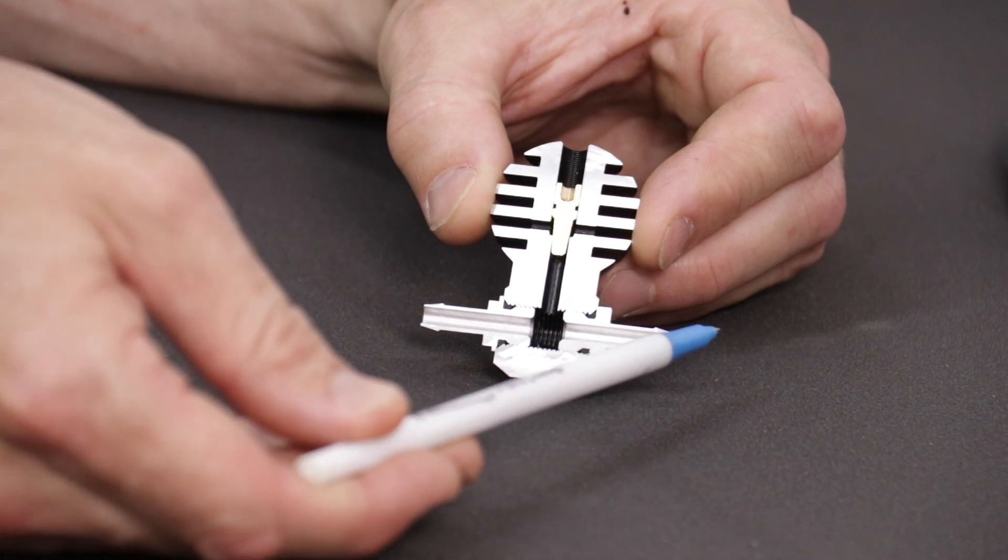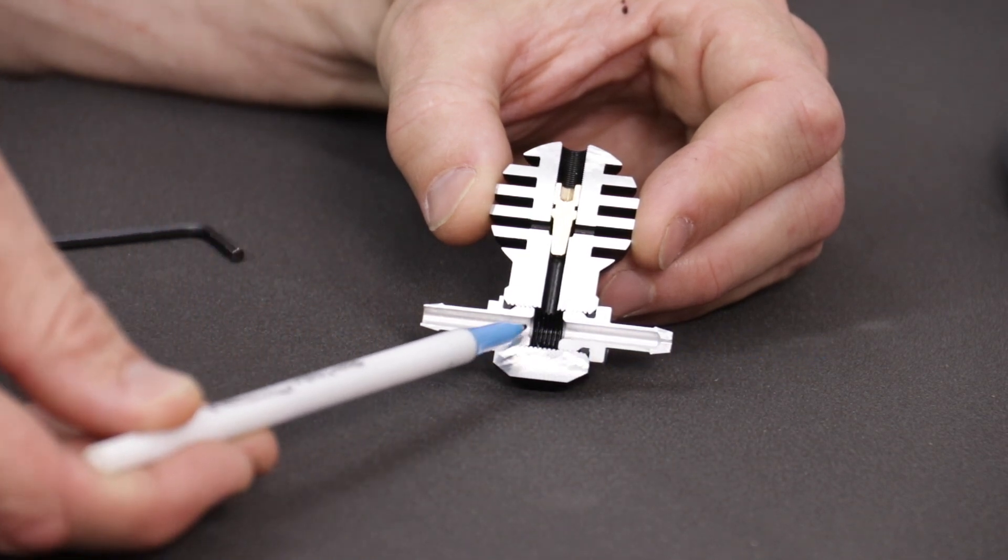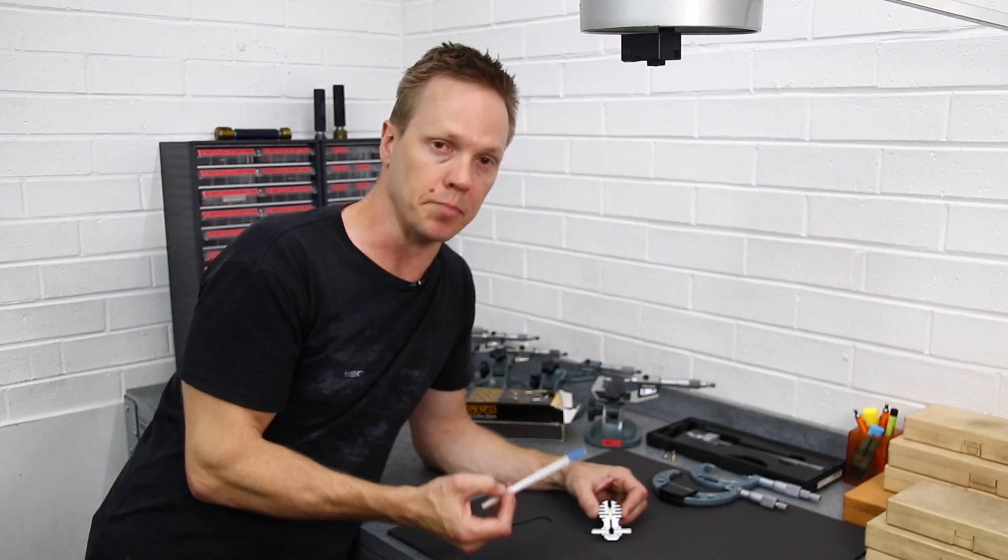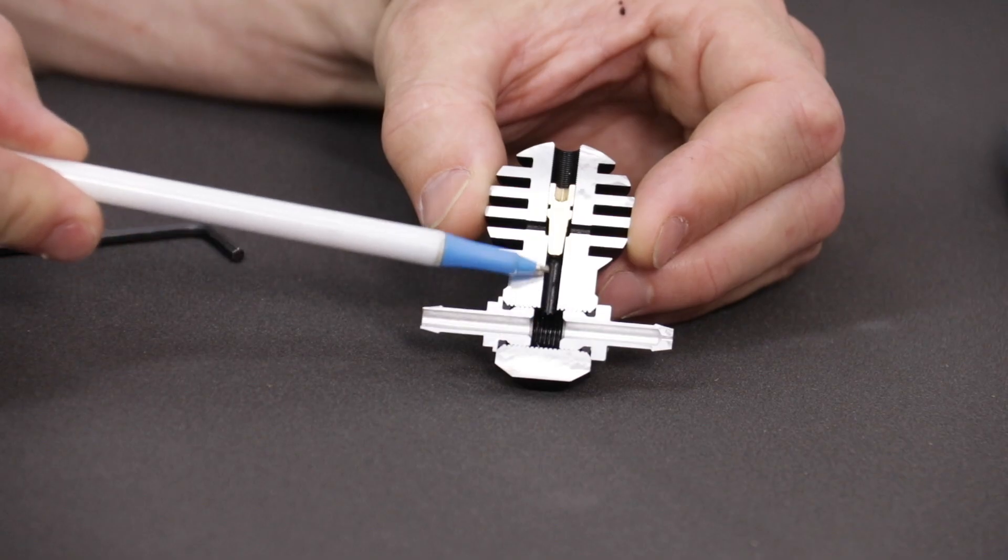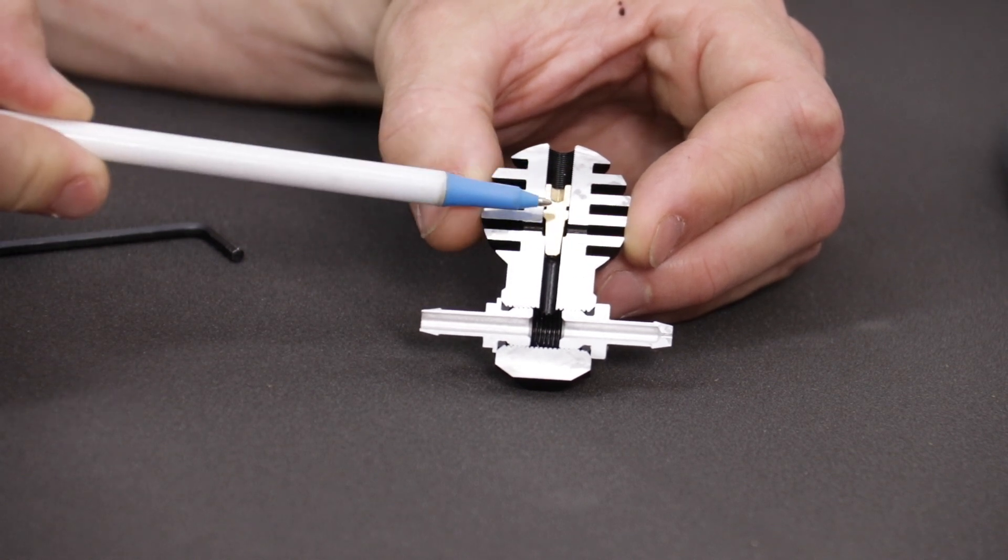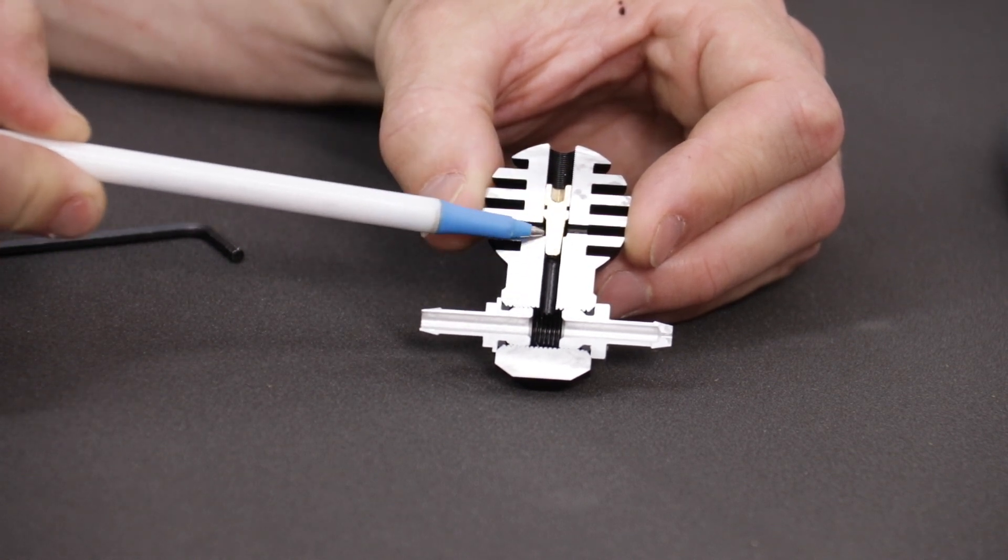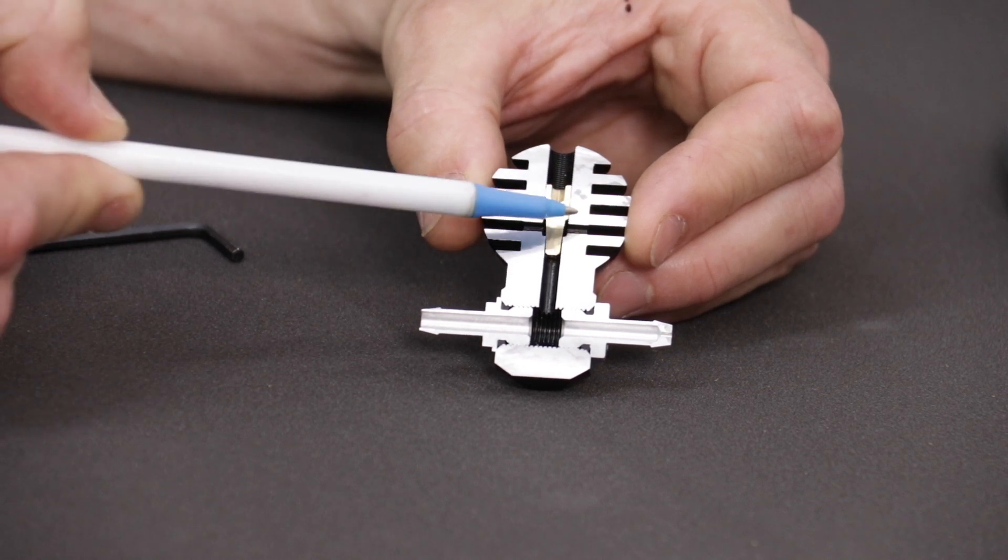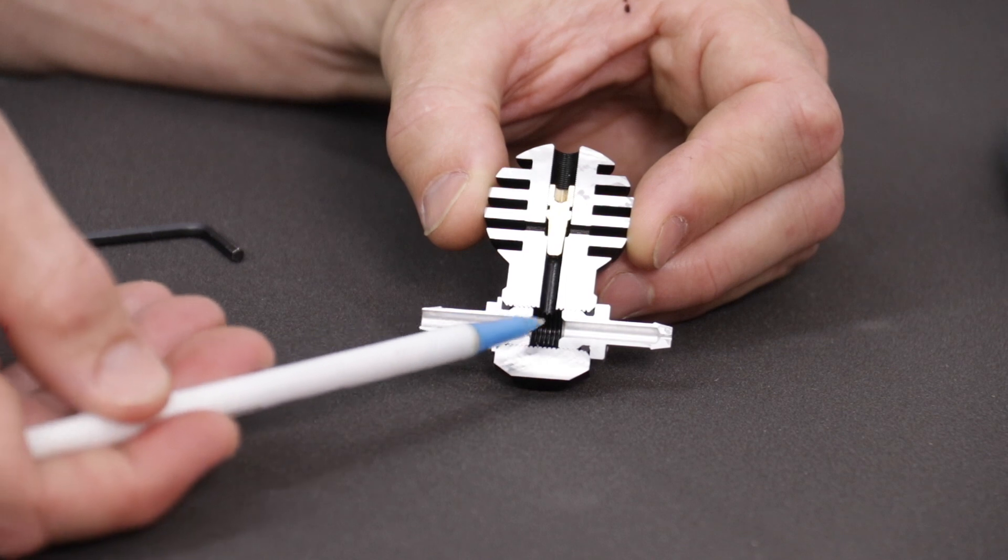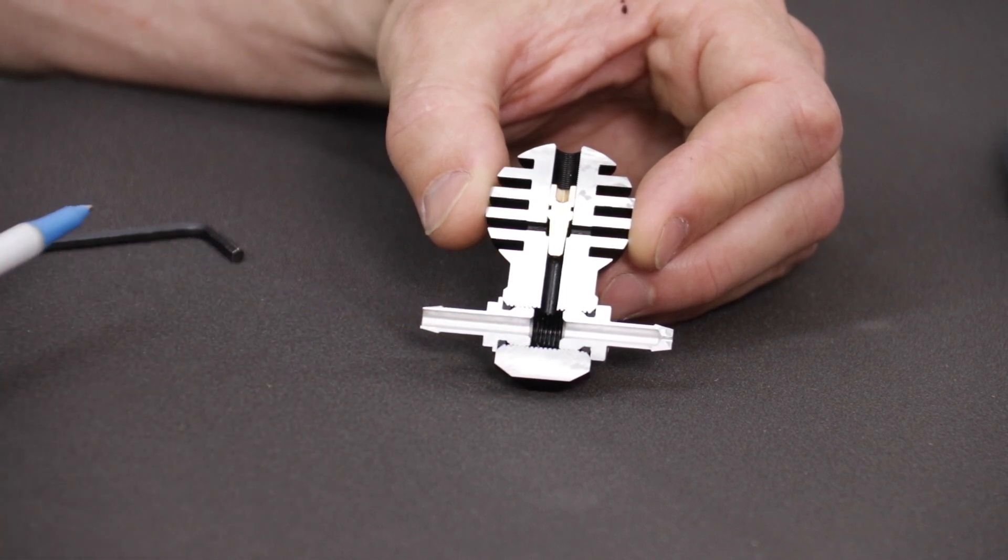So we've got boost pressure coming in through here, it goes into this chamber, straight out through to the wastegate actuator, but here's where the bleed part comes in. You have this vertical passage which leads up to the adjustment screw. So as you move this screw further out, it opens up this passage, lets the air bleed out through these two holes and basically what that is doing is reducing the amount of pressure that gets to the wastegate actuator.